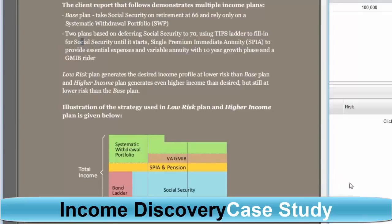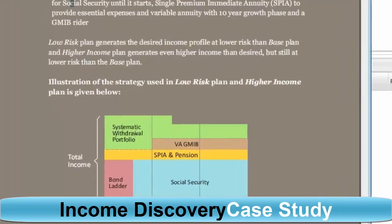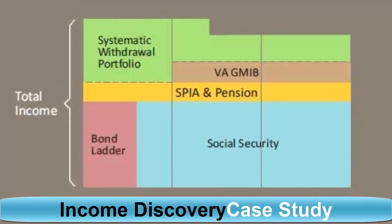Any questions at this point, Andy, before I go ahead and start running this case in the tool? Where is the rest of the portfolio — you've got bonds, you've got SPIAs, where is the participation in the stock market? So that's the systematic withdrawal portfolio. This is income being shown over time. The systematic withdrawal portfolio gets invested in a typical model allocation of stock and bond funds — a conventional investment portfolio. And does this graphic represent asset allocation or income source allocation? It's total income — it's an income source over time.